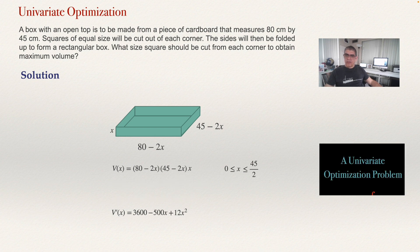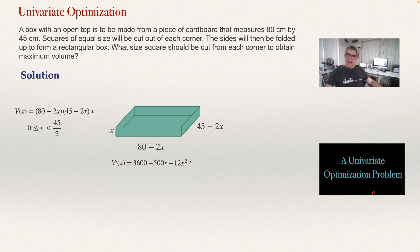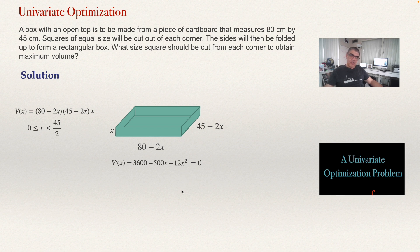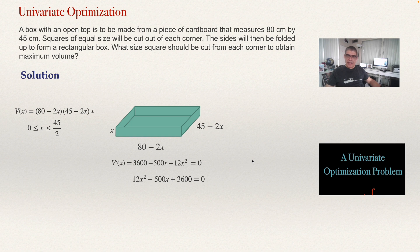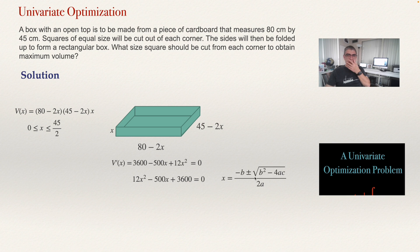Setting the derivative equal to zero and rearranging gives: 12x squared minus 500x plus 3600 equals zero. Remember the general formula for solving a quadratic equation: x equals negative b plus or minus the square root of b squared minus 4ac, all divided by 2a. Here a equals 12, b equals 500, and c equals 3600. Substitute everything into the formula to get the values of x.